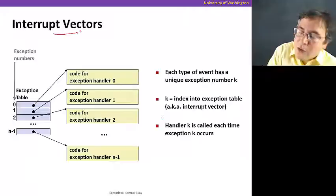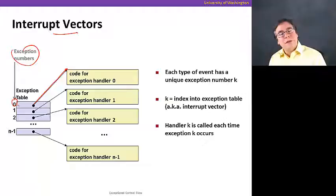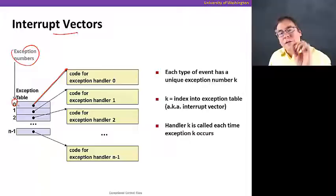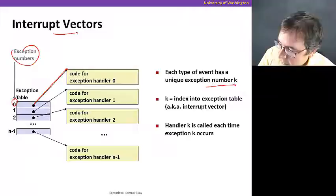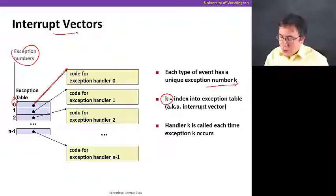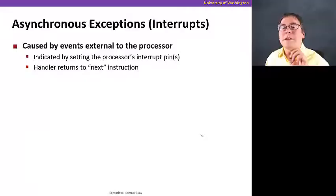There's something in your system called an interrupt vector that maps an exception to the code that handles it. Each exception has a number, and the interrupt vector is a table indexed by that exception number; the contents of the table is a pointer to the first instruction of the block of code that deals with that exception — it's an indirect jump table. Each type of event has a unique exception number k, which is an index to the exception table, also known as the interrupt vector. Whenever exception k happens, handler k is executed.